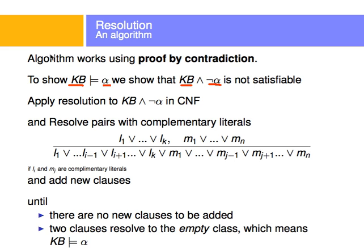I will start by negating what I want, and if negating what I want results in something illogical, then what I want is actually true. If negating what I want holds logically, then what I want is probably not true. We're going to apply resolution to this sentence: the knowledge base — all the ands of rules, the conjunction of rules — and the negation of the query in conjunctive normal form. We will resolve the pairs of complementary literals, meaning those that have the positive and negative version of them.